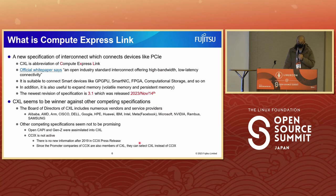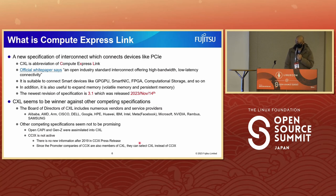CXL seems to be a winner against other competing specifications. The board of directors includes numerous vendors such as Alibaba, AMD, ARM, Cisco, Meta, Intel, Microsoft, and so on. Other competing specifications seem not to be promising. OpenCAPI and Gen-Z were assimilated into CXL, and CCIX is not active — there has been no new information after 2019 in CCIX press releases. Since the promoter companies of CCIX are also members of CXL, they can select CXL instead.